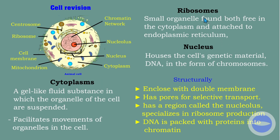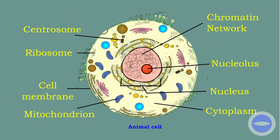Another thing to remind you is ribosomes. Ribosomes are small organelles found both free in the cytoplasm and attached to the endoplasmic reticulum. Ribosomes are these small black dots that you see. The endoplasmic reticulum is the part surrounding the nucleus. Ribosomes are more concentrated around the nucleus, and we also have some ribosomes further away — that is where protein synthesis is happening.